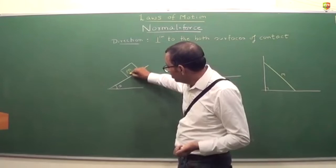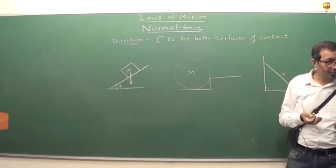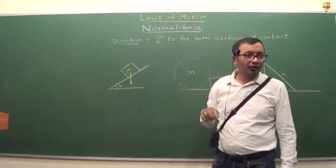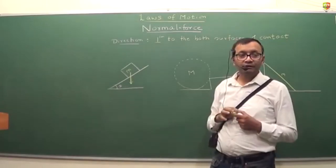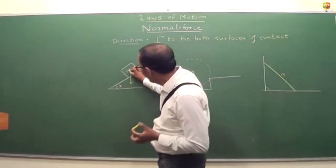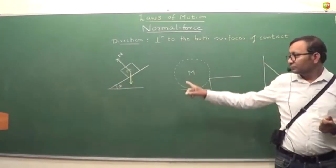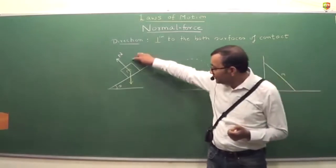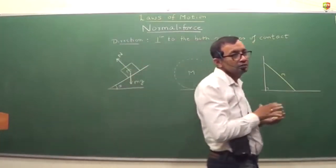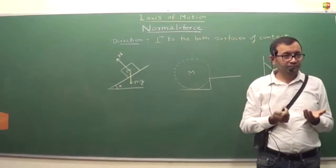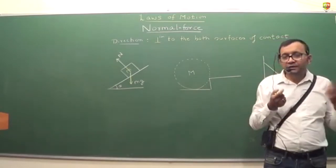The direction of mg force will be downward — this is mg; you represent forces with an arrow because it is a vector. The normal reaction on the inclined plane: you might think you should split mg into components, but the normal reaction is a separate force. This is the normal reaction perpendicular to the inclined surface, and this is mg — two separate forces. mg sine theta is a component of mg, which is different from normal reaction.